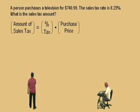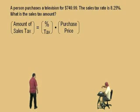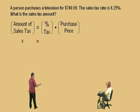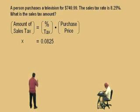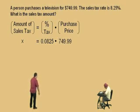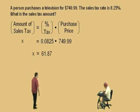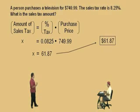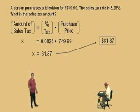Here's our format: the amount of sales tax is equal to the percent tax times the purchase price. Now, which one are we looking for, Charlie? The amount of sales tax — so that's our X. What's our percent tax as a decimal? 0.0825 — you move it two places to the left. And what's our purchase price? $749.99. So to solve for X, you just multiply, and what do you get, Charlie? 61.87. That means the amount of sales tax for this television at the tax rate of 8.25% is $61.87.